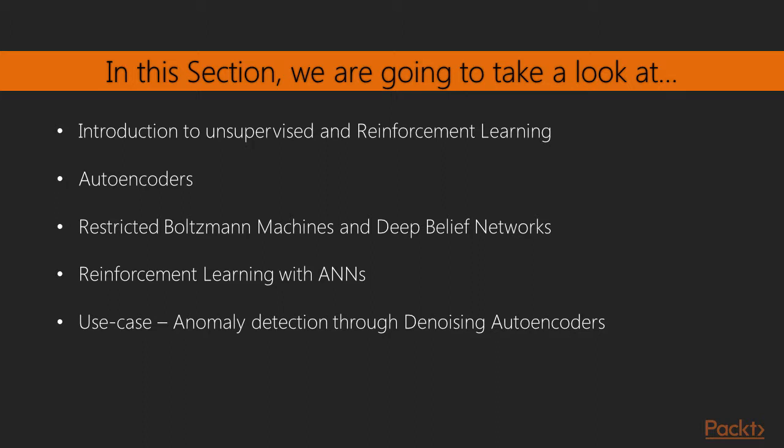In the fourth video we will learn more about reinforcement learning and how we can use deep neural networks to improve the accuracy and scalability of our solutions. Finally in the last video we will see as a real use case how to detect anomalous data through denoising autoencoders in R.